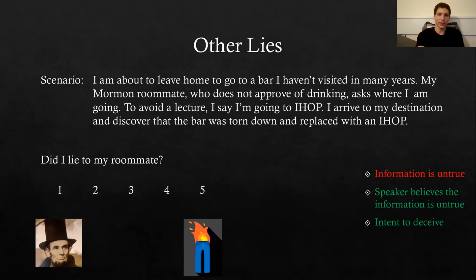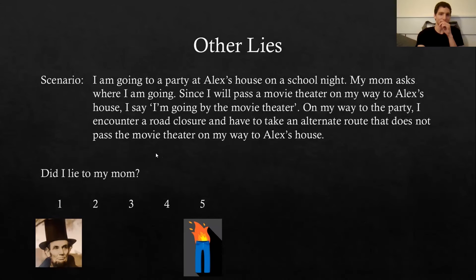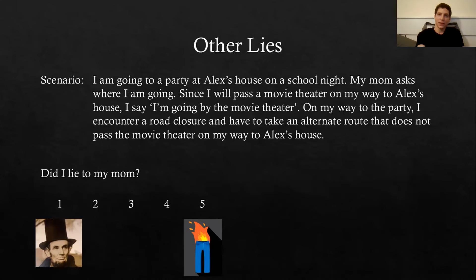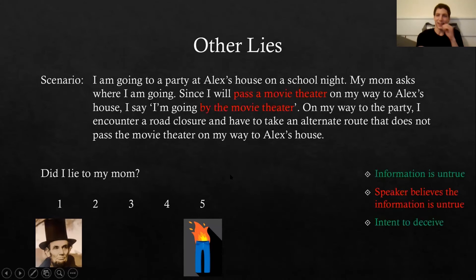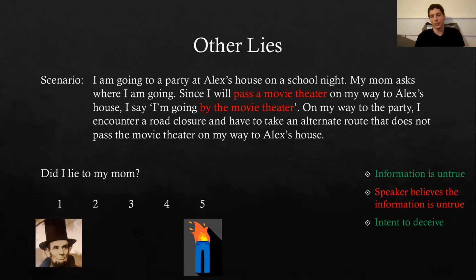People still think that's quite a lot of a lie. Now another instance: I'm going to a party at Alex's house on a school night. My mom asks where I'm going, and since I'm going to pass by a movie theater on my way, I say I'm going by the movie theater. But on my way to the party there's a road closure and I have to take an alternate route that doesn't pass the movie theater. The information I gave my mom was untrue, but I thought I was telling her something true.